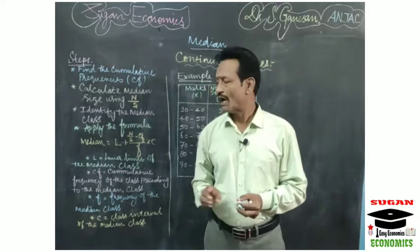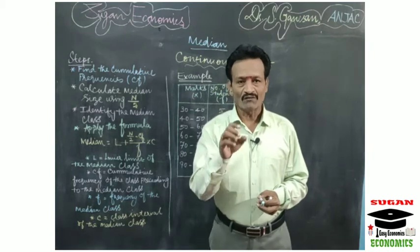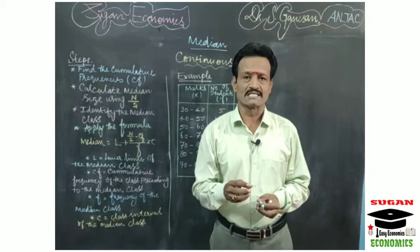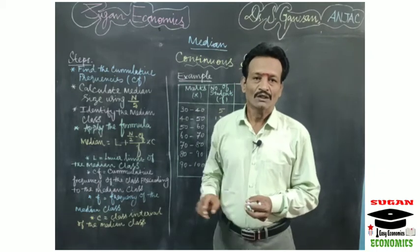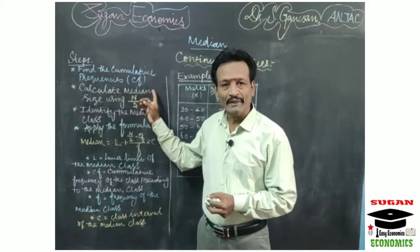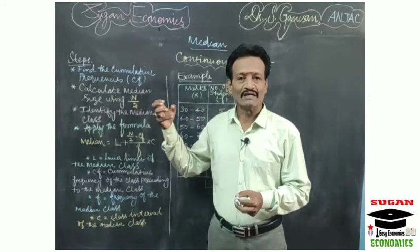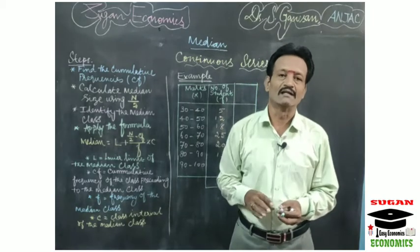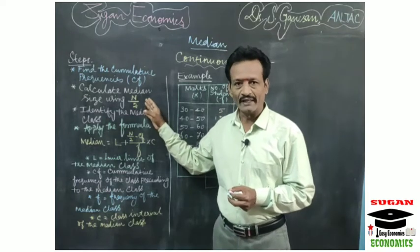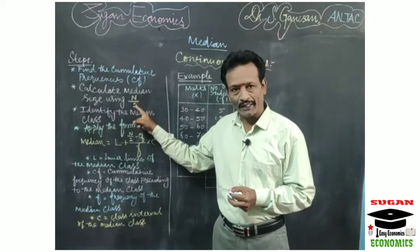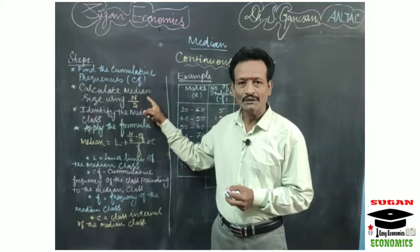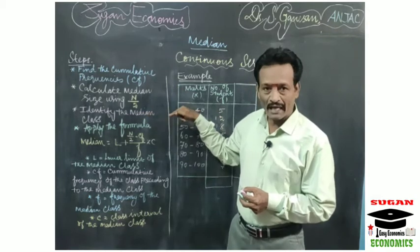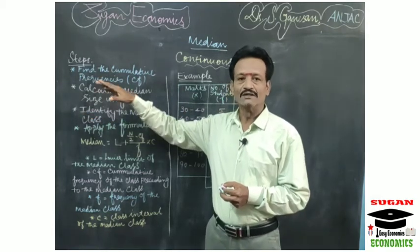Then after that, we have to identify the median class. After finding out the median size, you have to identify the median class. The n by 2 value — that is the median size value — where it comes under the cumulative frequencies, you locate first. That particular class is called the median class.